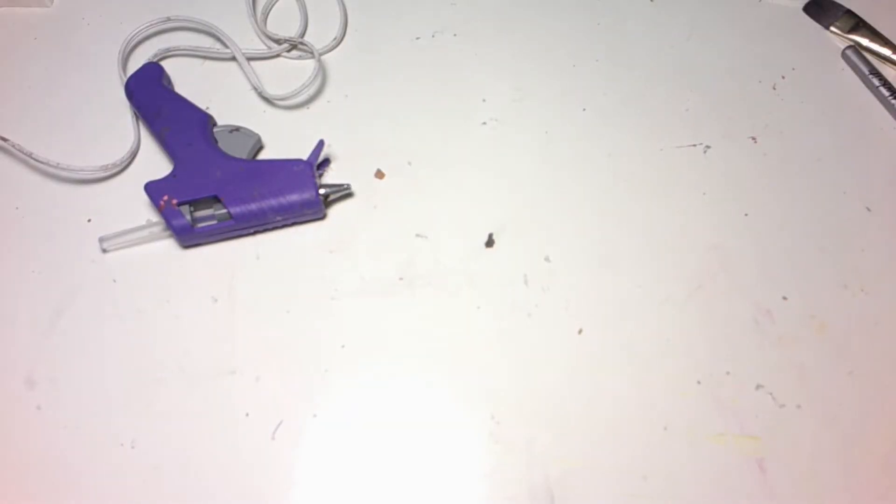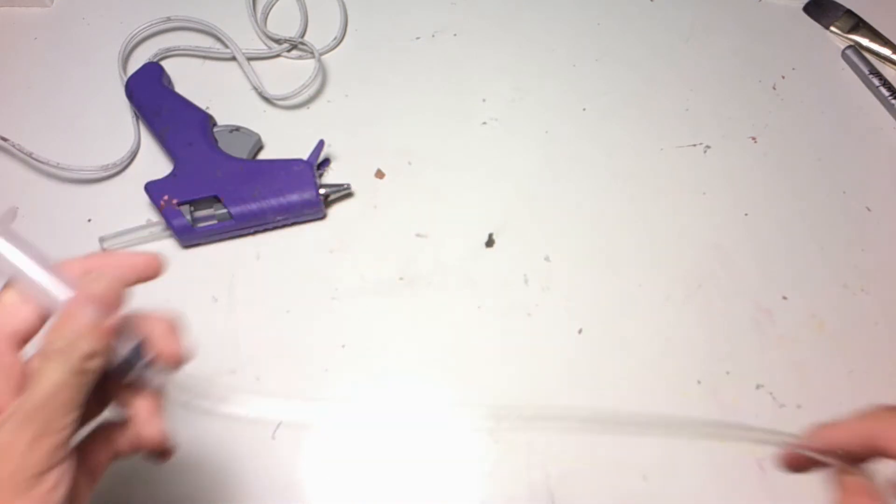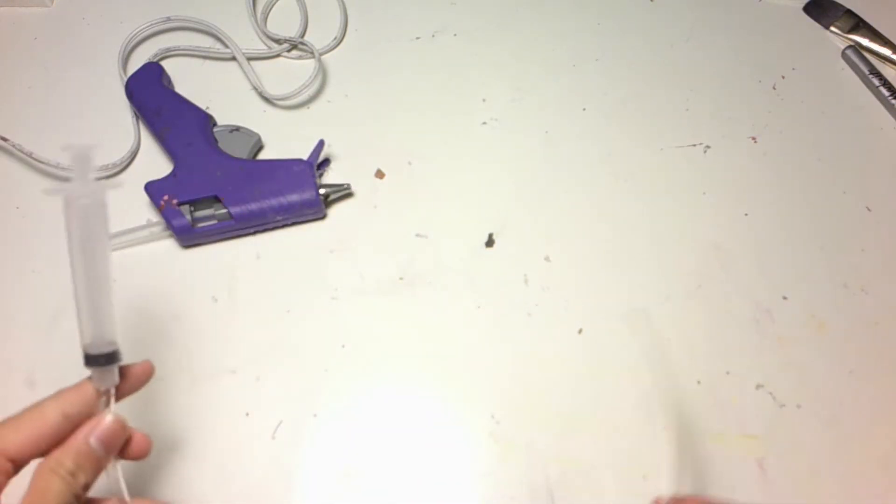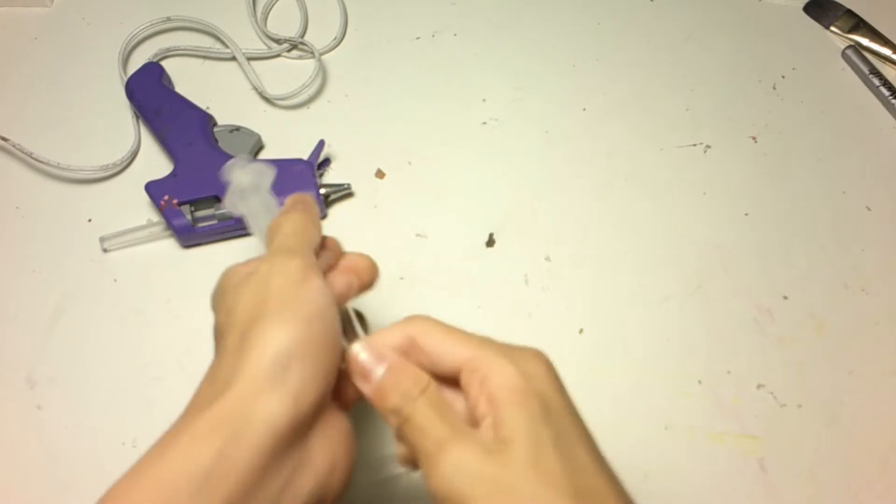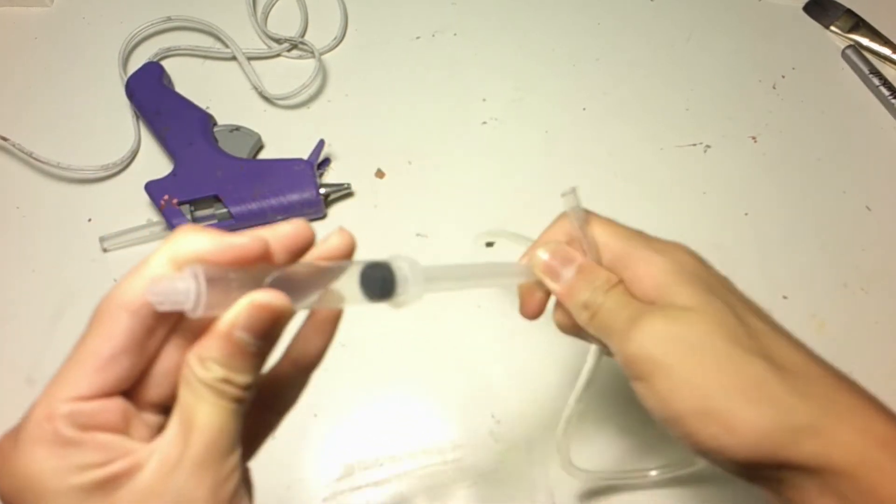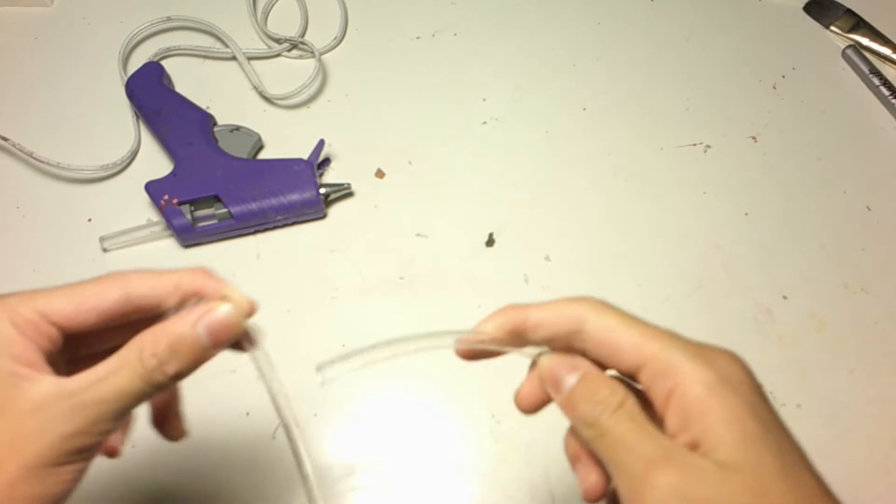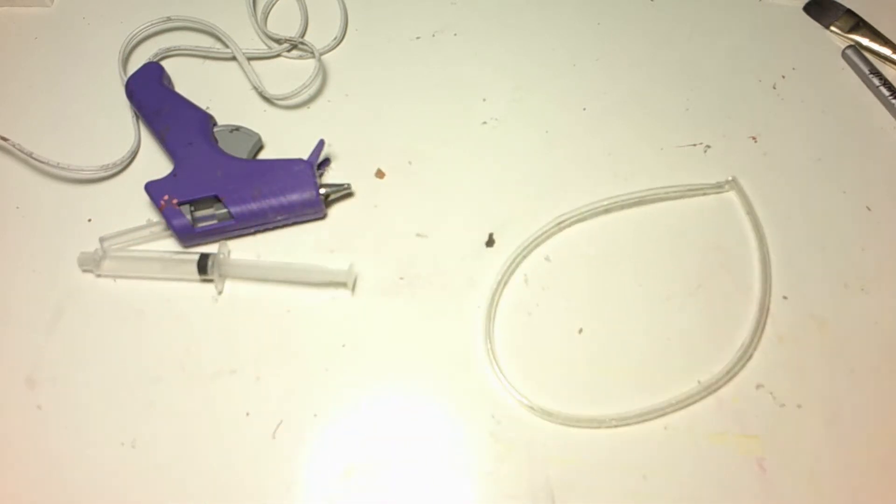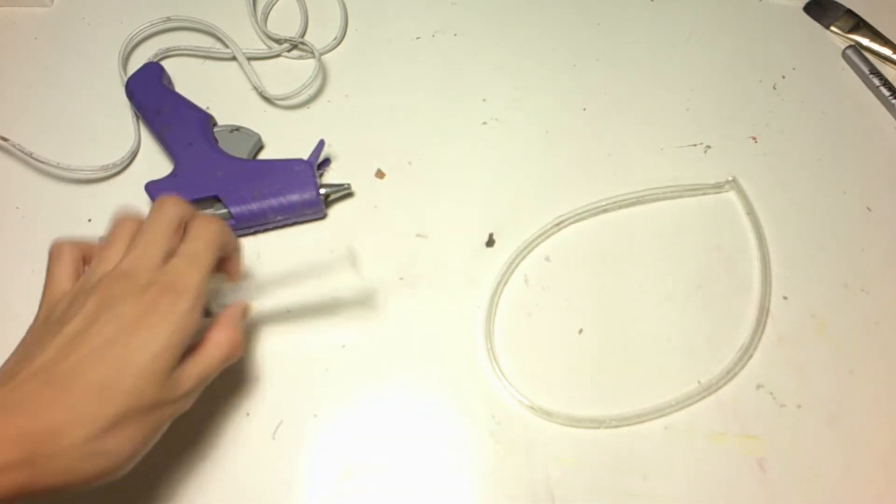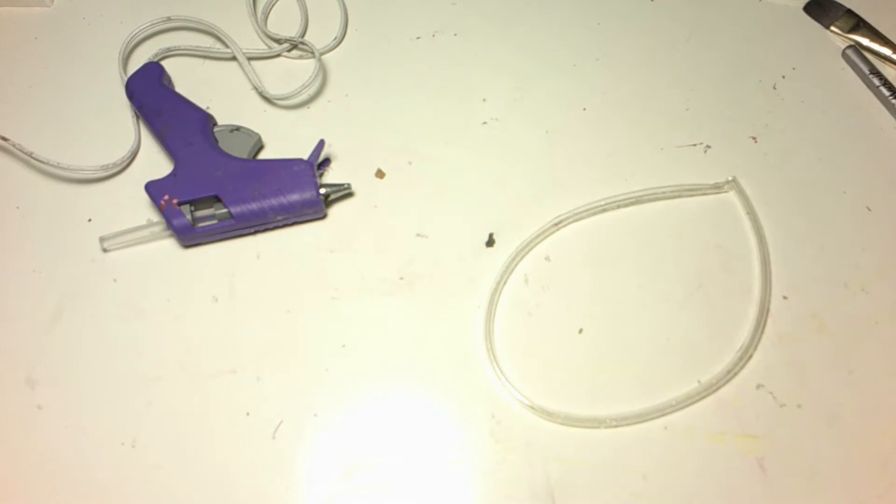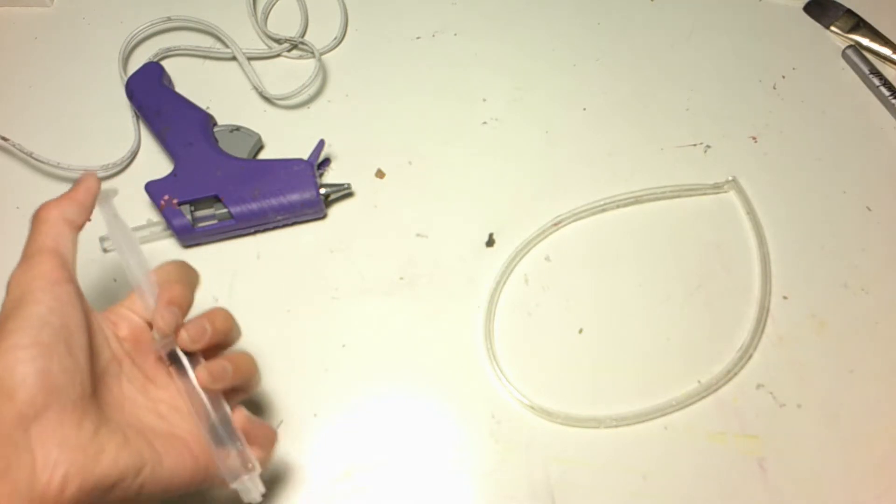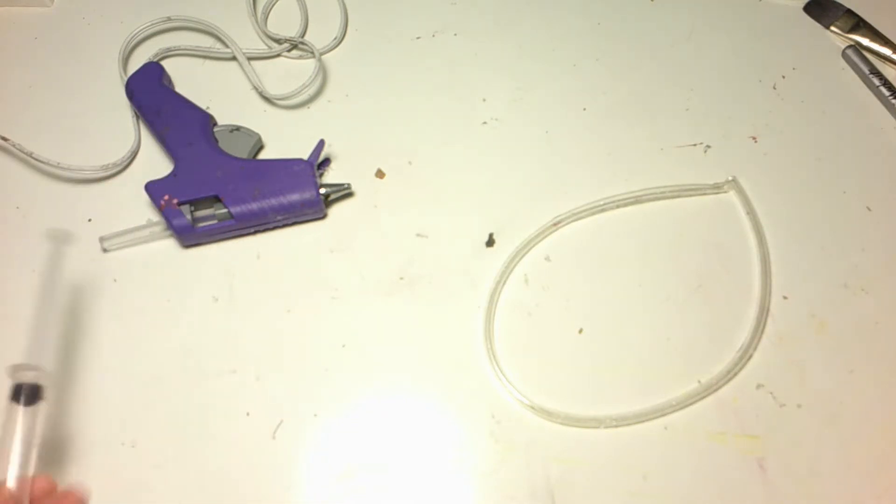Alright, so let's get started. This is going to be pretty easy. It's a pretty easy project, but one of the most crucial things here are these two things. This is just a medical syringe and a tube that goes in. These are the two most important parts of the whole build. And you can find them, you can actually ask at a hospital or a medical center, and you can probably get these for free. If not, they're really easy to find on Amazon.